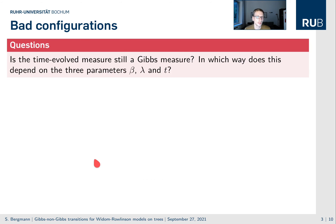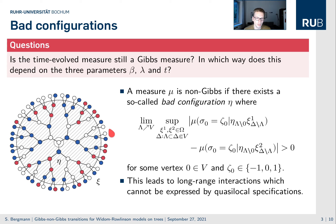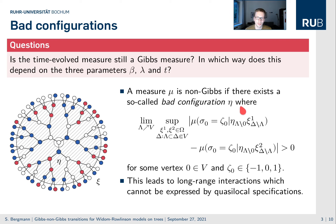We were wondering whether the time-evolved measure is still a Gibbs measure, and in particular we want to show or search for parameter regimes where the measure is non-Gibbs. A condition for non-Gibbs are so-called bad configurations — configurations that allow for long-range interactions. We look at single-site probabilities conditioned on a configuration eta in a finite ring around a spin, then take different configurations outside and look at the difference of the probability at the center. If there is a difference, we call this a bad configuration, because far-away influences under growing lambda can percolate through the configuration eta.